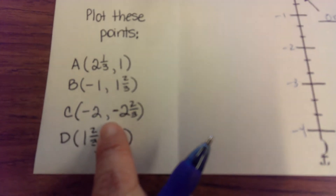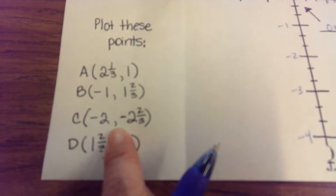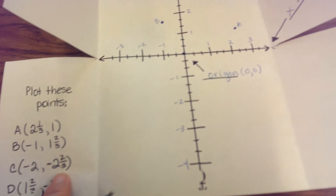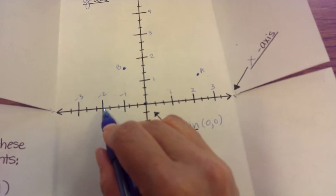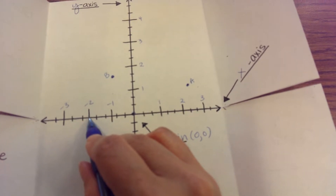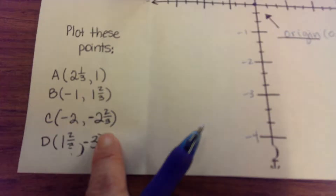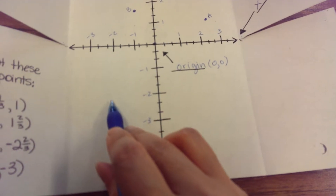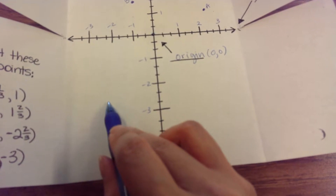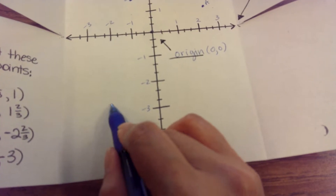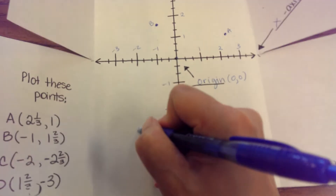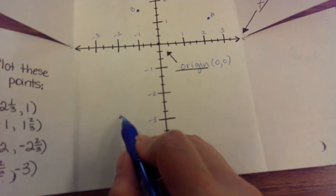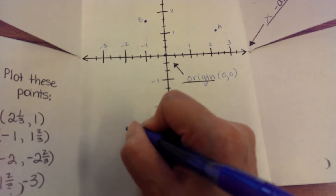Point C: we go two steps to the left, and the elevator takes us down two and two-thirds. So we walk two steps to the left, then go down one floor, two floors, and then one-third, two-thirds. There's two and two-thirds — that's where point C is.